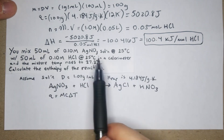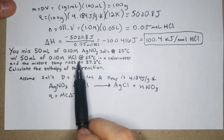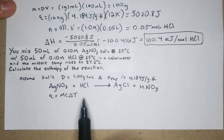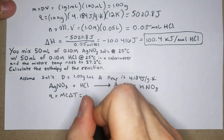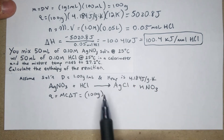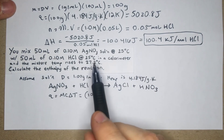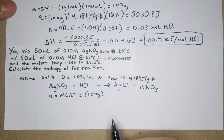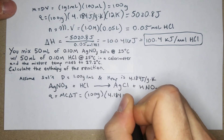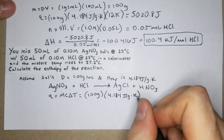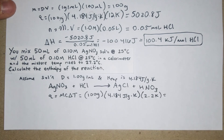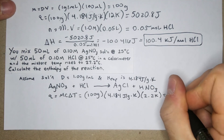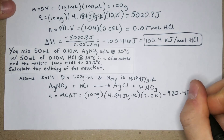Total volume is 100 mL, density is 1 g/mL, so mass = 100 grams. Heat capacity is 4.184 J/(g·K). Temperature change is 27.2 − 25 = 2.2 K. So q = 100 × 4.184 × 2.2 = 920.48 joules.